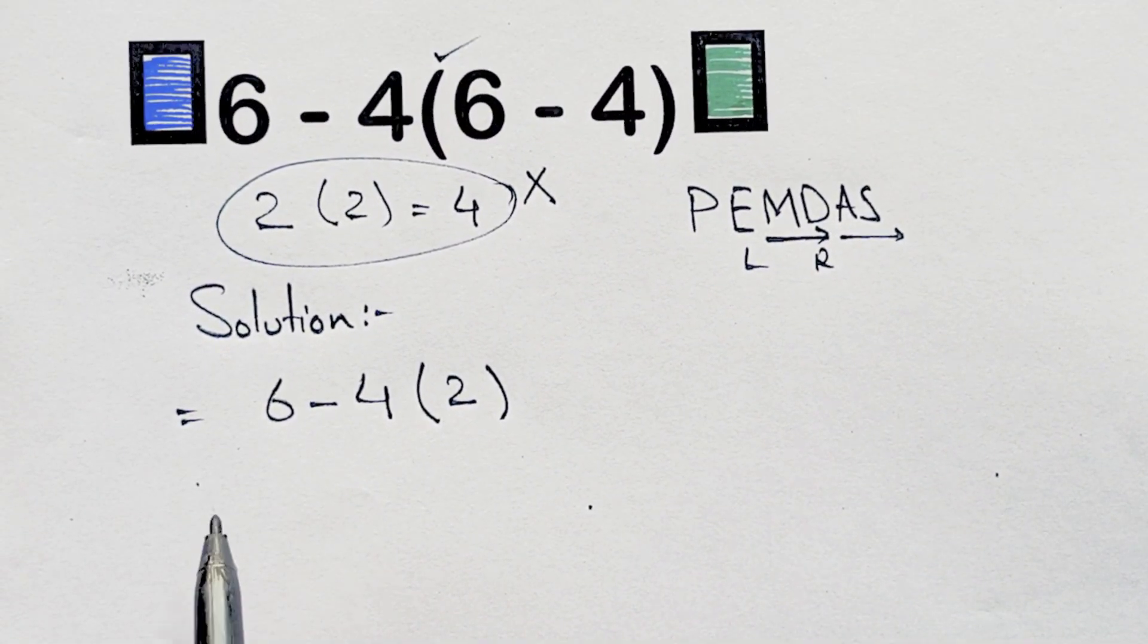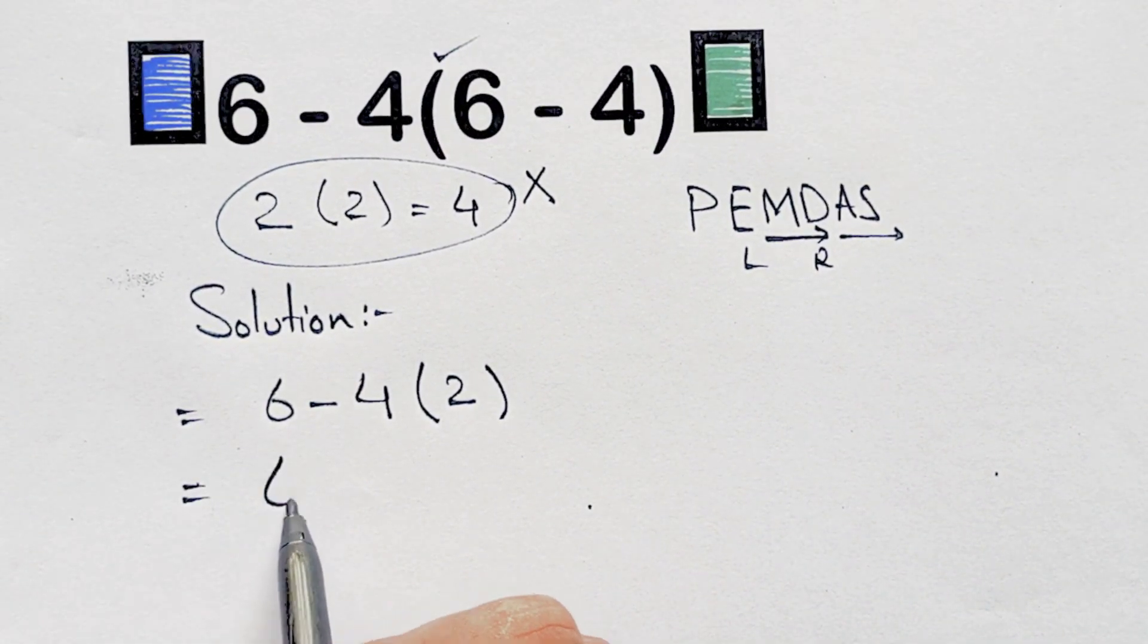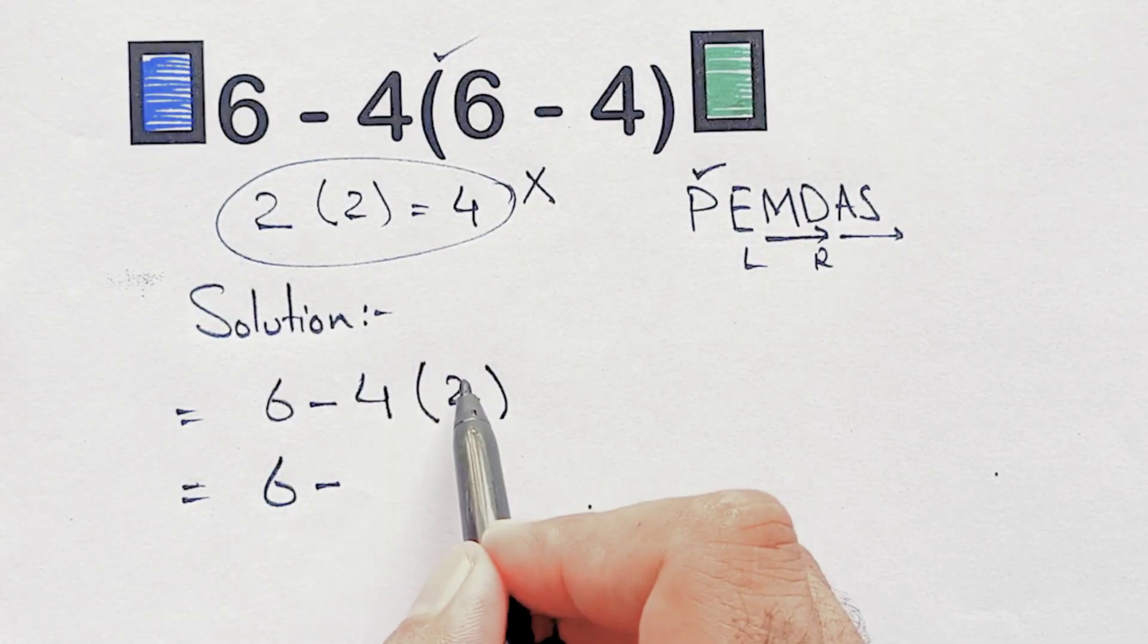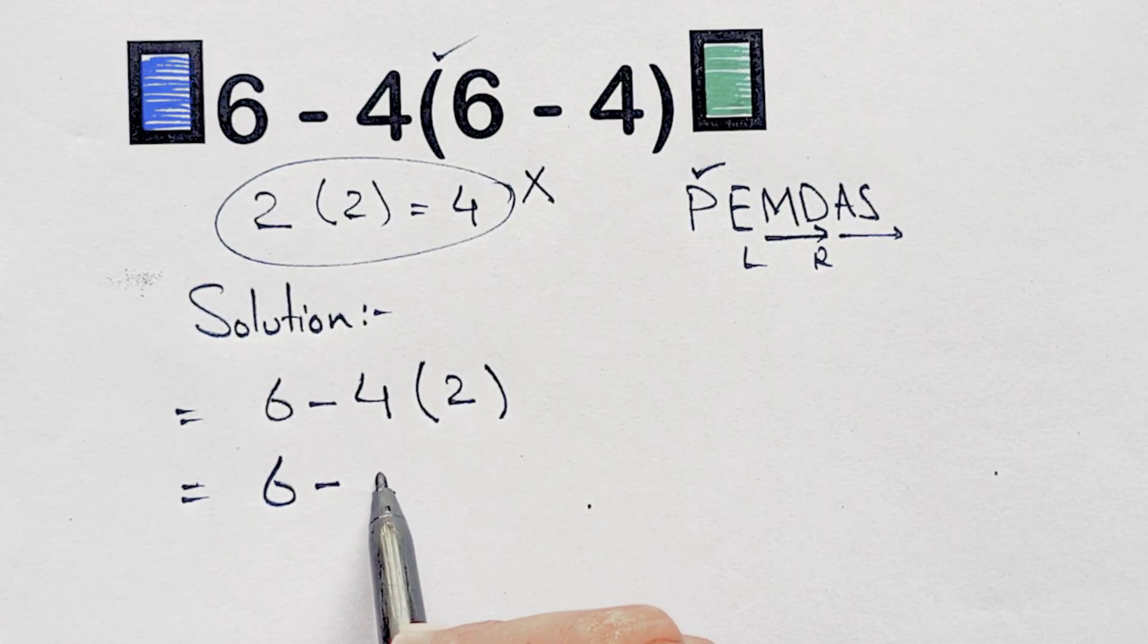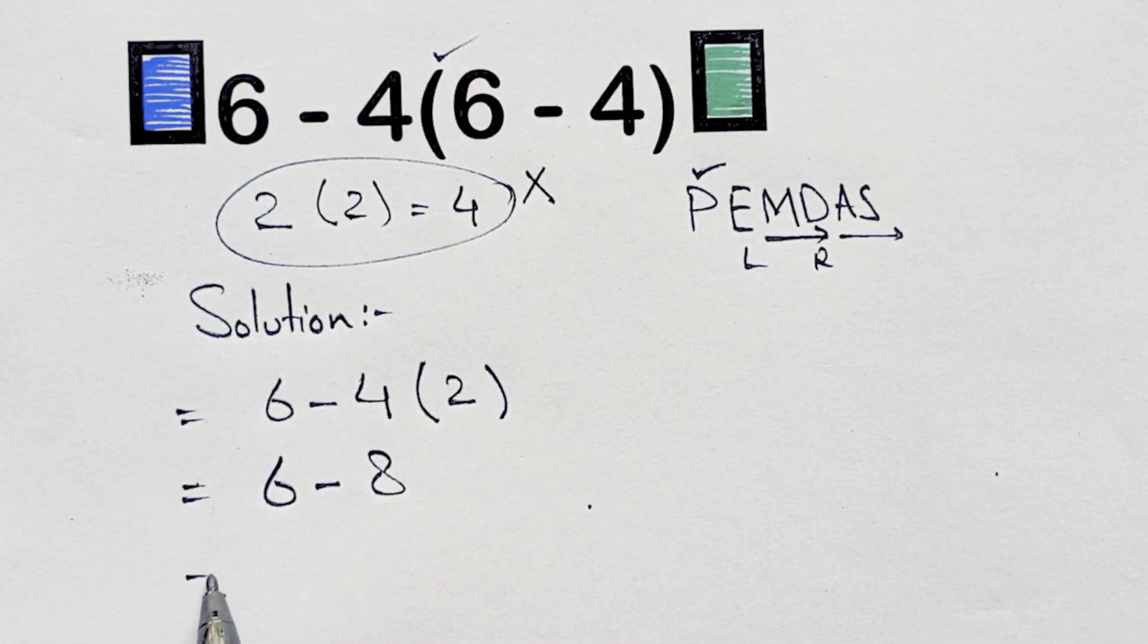Now, according to PEMDAS, multiplication has higher priority than subtraction. So first, this multiplication, four times two, which equals to eight.